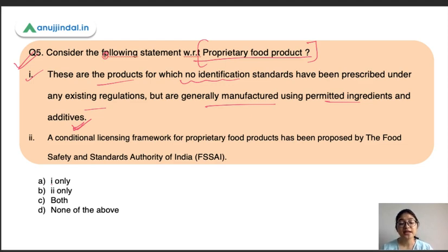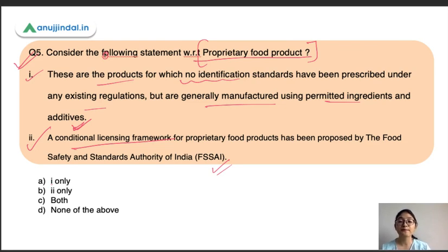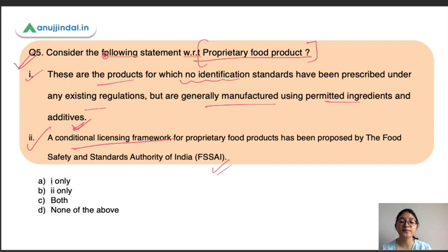The second statement says a conditional licensing framework for proprietary food products has been proposed by FSSAI — the Food Safety and Standards Authority of India. The proprietary food product market has large penetration, but since no standards are prescribed, manufacturers are avoiding compliance related to composition, labeling, and packaging. To protect consumers, FSSAI has come up with this conditional licensing framework. Both statements are correct, making option C correct.